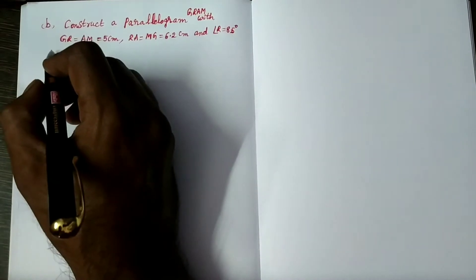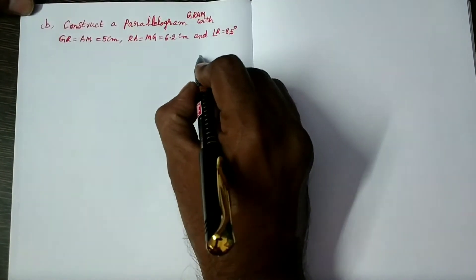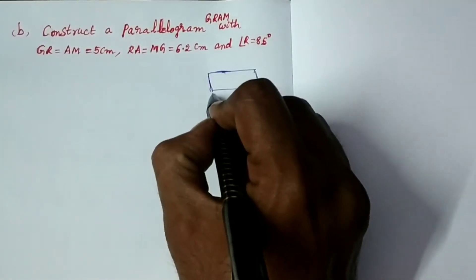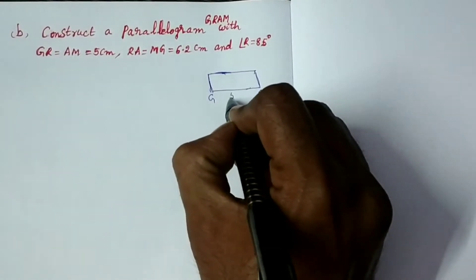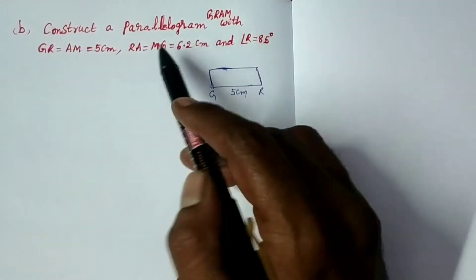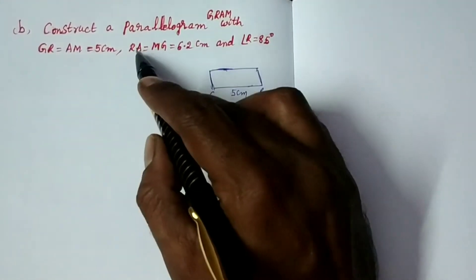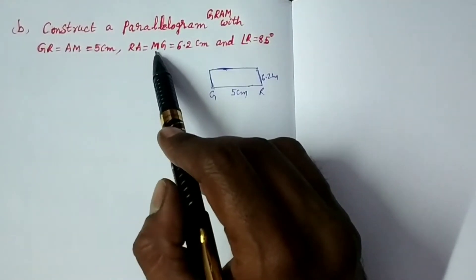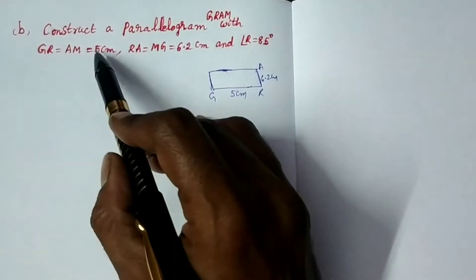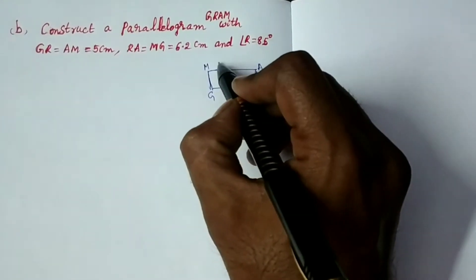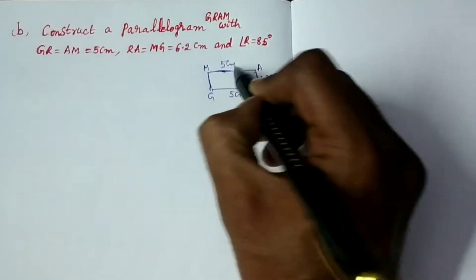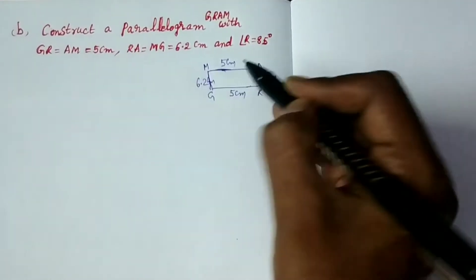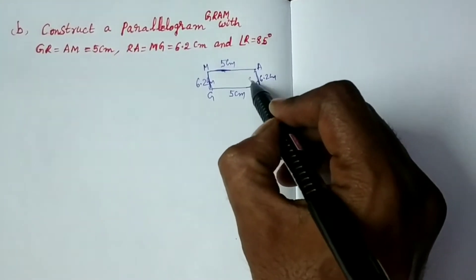Let us go to analysis. Actually, in a parallelogram, pair of opposite sides are equal. GR equals 5 cm, and RA equals 6.2 cm. This is a rough diagram. AM equals 5 cm, MG equals 6.2 cm, and angle R equals 85 degrees.